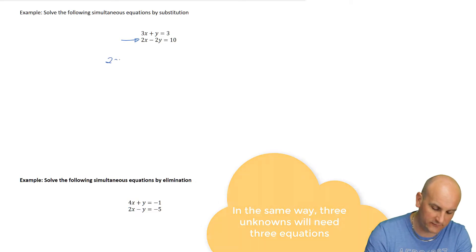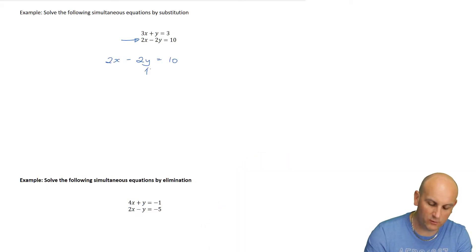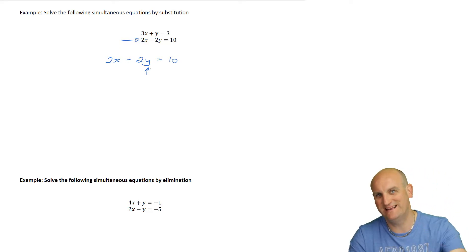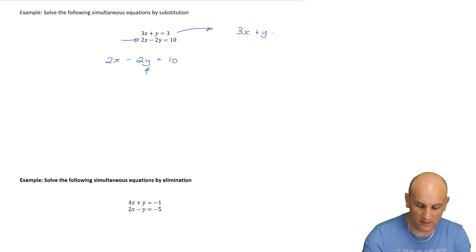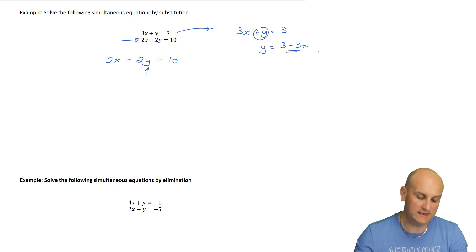I have 2x minus 2y equals 10. Can I get rid of this y? Is there another equation I can rearrange and substitute in? There's this one: 3x plus y equals 3. I can isolate y by taking away 3x from both sides.